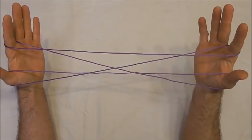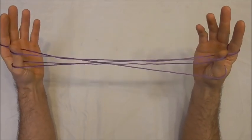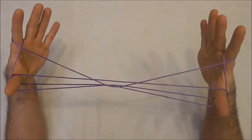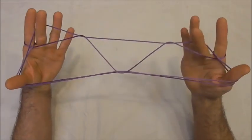Next I want to take my thumbs over the near pointer finger string and then collect the far pointer finger string from underneath. I want to take my middle fingers and collect the far thumb string.